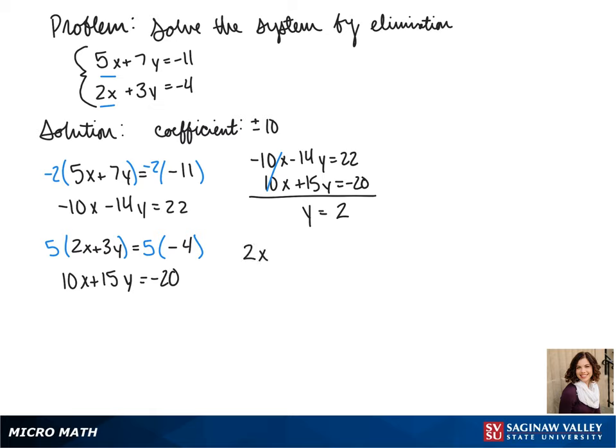Now we plug 2 back into one of our equations to solve for x. We get 2x plus 6 equals negative 4. Subtracting 6 from both sides gives us 2x equals negative 10, so x equals negative 5.